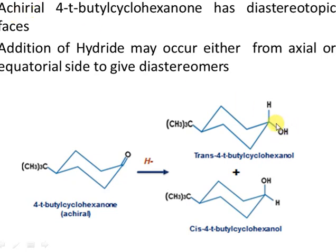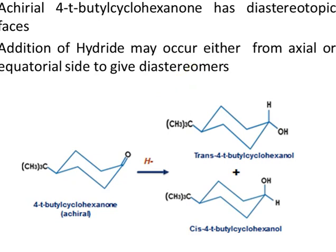The trans isomer has the hydroxyl below and the tert-butyl group above — opposite sides — while in the cis isomer, both groups are on the same side. The trans isomer is formed in preference because the hydroxyl group at the equatorial position gives a more stable conformation than the axial hydroxyl in the cis isomer. Therefore, this diastereomer is formed in excess, making this a diastereoselective reaction. The diastereoselectivity arises from the carbonyl group, which is diastereotopic here.